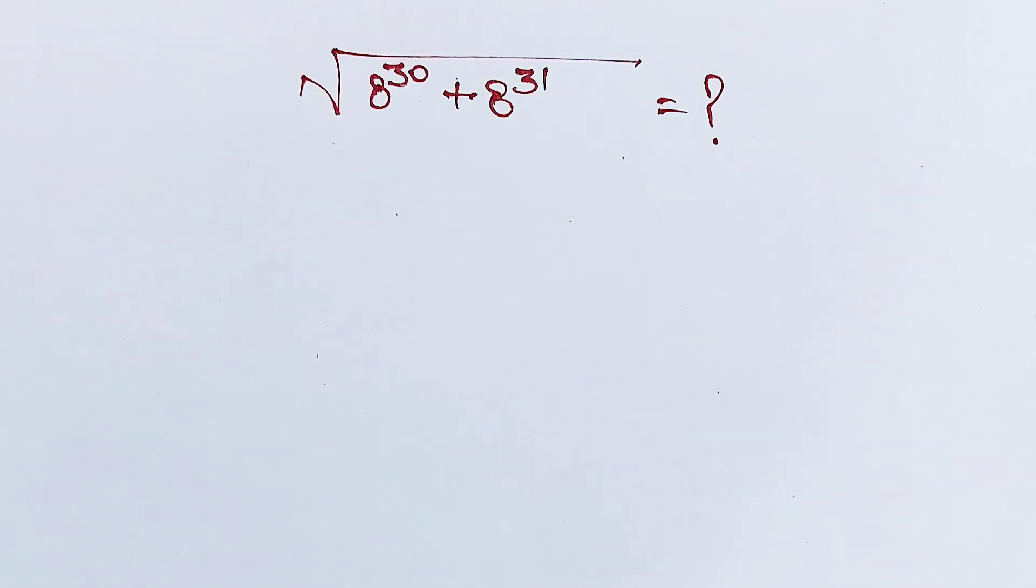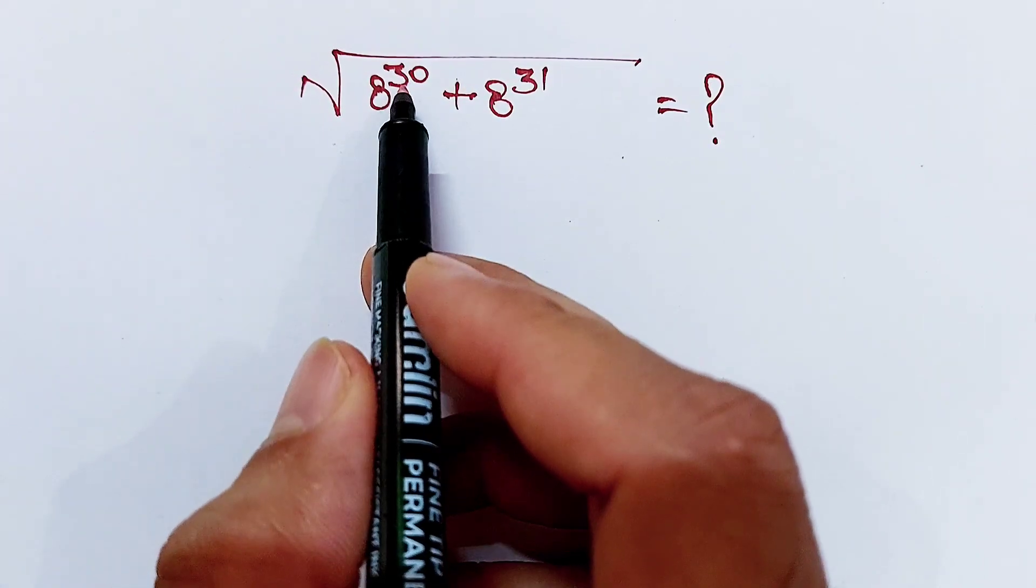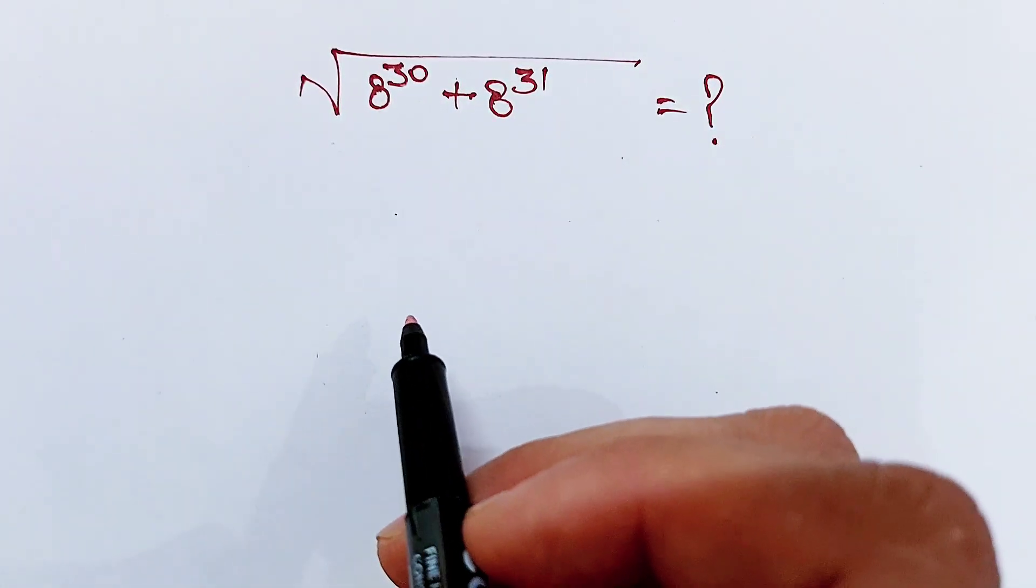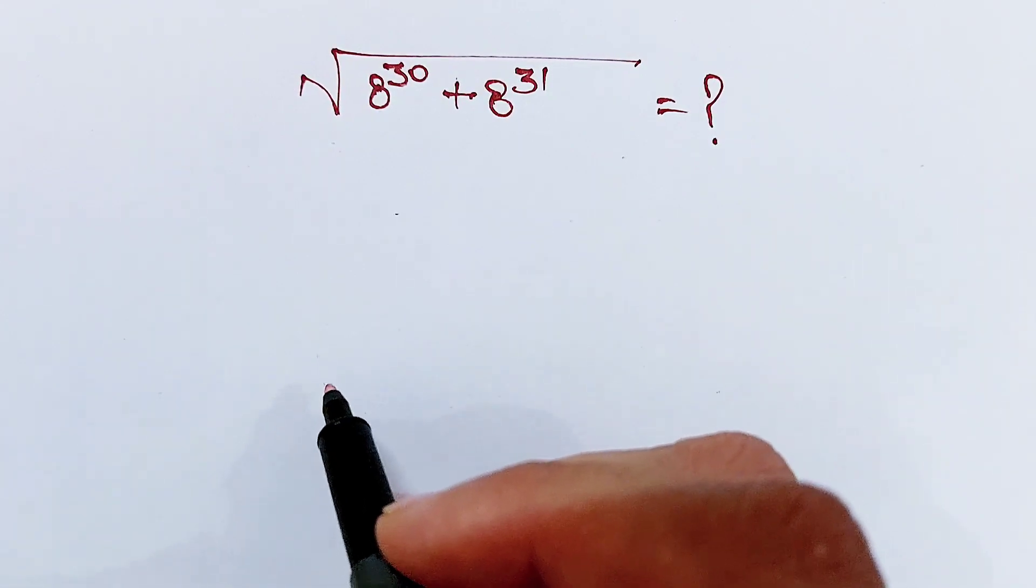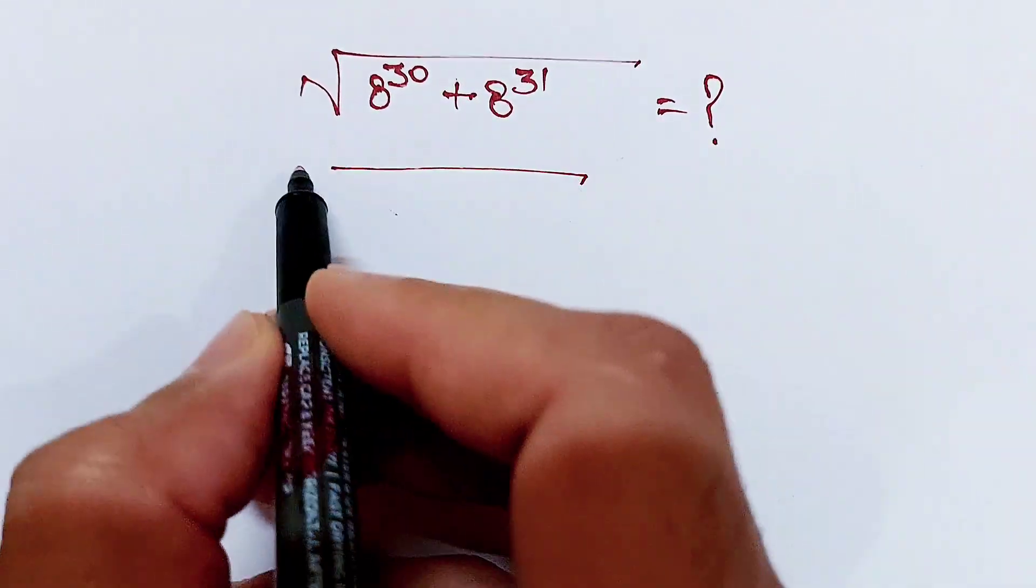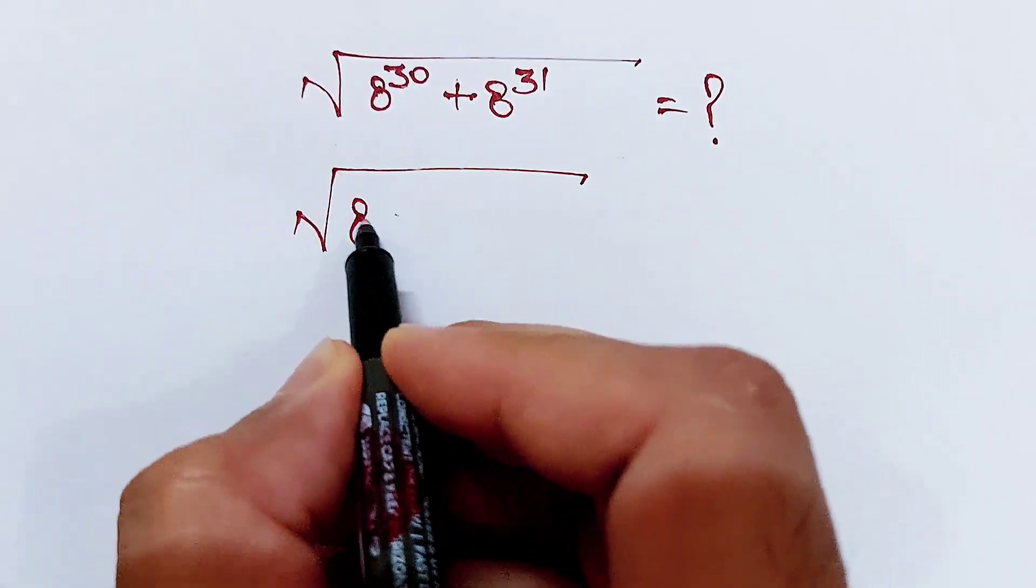Hello! The question is, we have to find the square root of 8^30 + 8^31. Let's find out. First of all, we can write this term as square root of 8^30